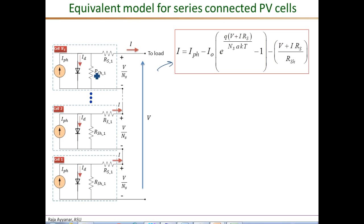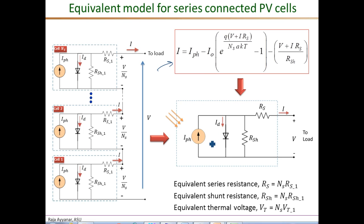The circuit of NS cells in series, represented by the derived equation, gives the complete equivalent circuit model of a module with NS cells in series. The photon current is the same as that of any single cell. The equivalent diode's thermal voltage is NS times that of a single cell. The series resistance is NS times RS1, the shunt resistance is NS times RSH1, and the same external current flows in this equivalent model.